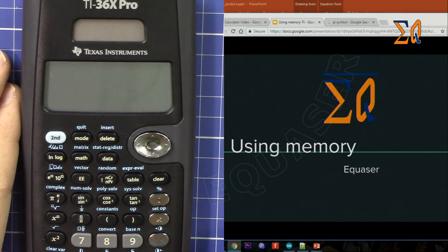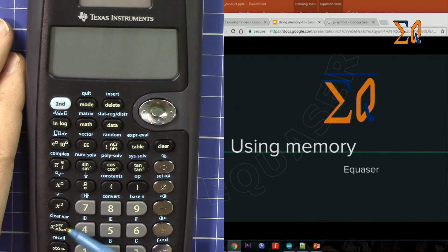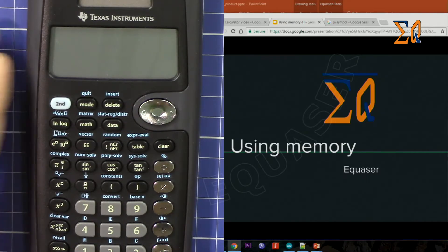This calculator has the following memories here: we have X, Y, Z, T, A, B, C, D. So all these values are available.